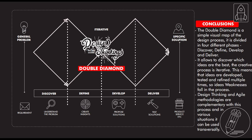As a conclusion, we can say that Double Diamond is a simple visual map, and the design process is divided in four stages. It's always very important because it will allow you to create something specific for a general situation. The design process is also very iterative, because you always have to work with users, and the result will be a product, a service, or sometimes a business model.